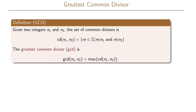We will define the greatest common divisors among two integers n1 and n2, starting by looking at the common divisors between two integers. Given two integers n1 and n2, the set of common divisors is denoted as cd of n1 and n2, and this is all integers m such that m divides n1 and m divides n2.